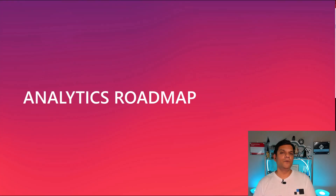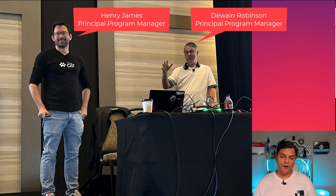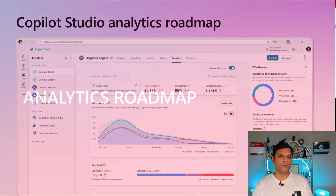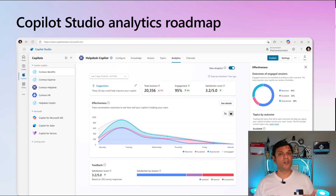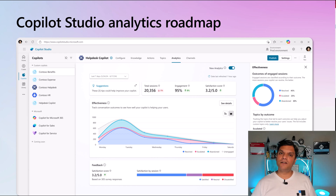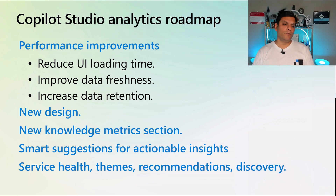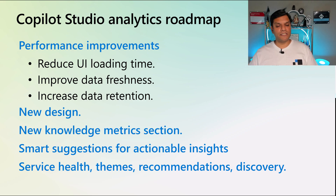Another session I attended was the one by Henry Janes and Dwayne Robinson, and they really wowed me with all the enhancements coming on the analytics roadmap. Not a lot of updates had been done on the analytics side. One thing that frustrated me even back in the Power Virtual Agent chatbot days was that analytics could sometimes take 24 or 36 hours to give updated data. That's not going to be the case anymore. The data analytics is going to be completely revised and made new — it will refresh faster too, sometimes as fast as four hours. Items on the roadmap include performance improvements, new design, a new knowledge matrix section, smart suggestions, service health themes, recommendations, and discovery. It's needed this TLC for about four years.